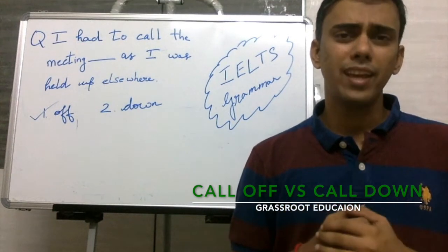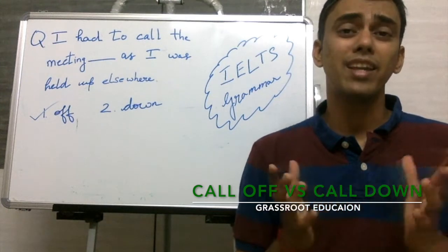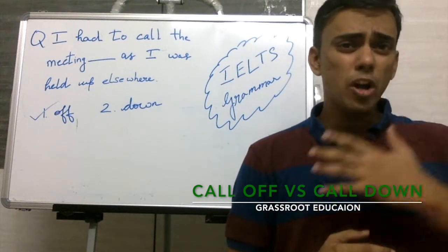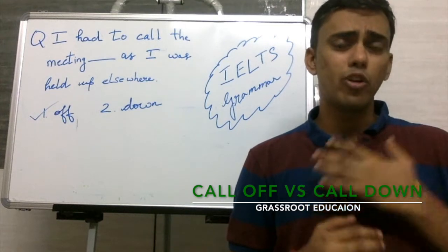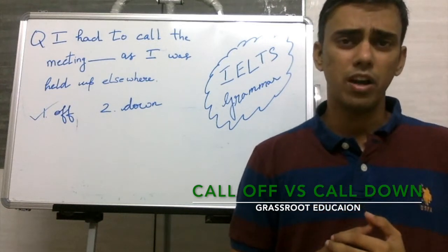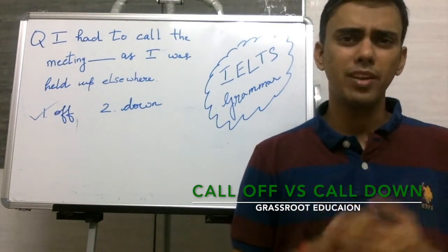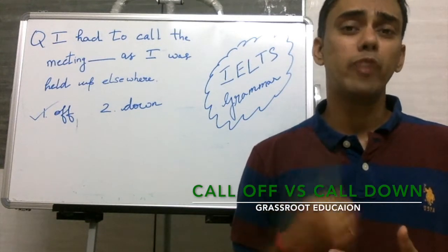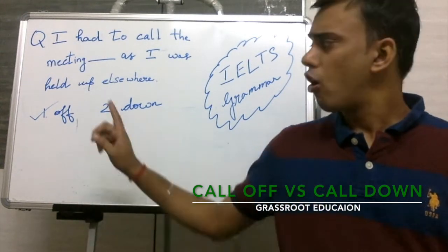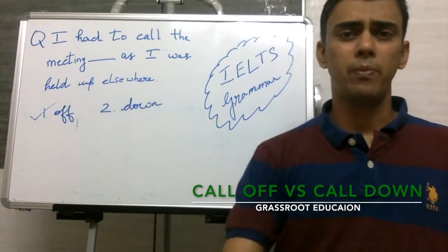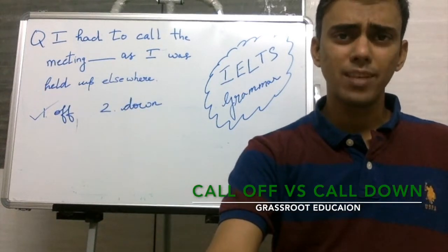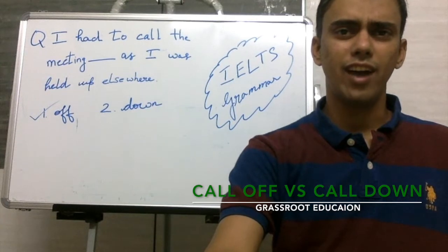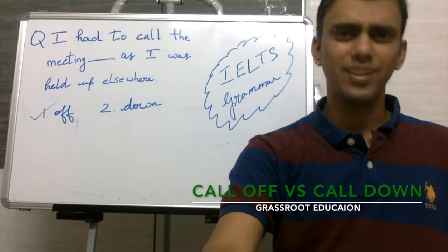The second usage of 'call down' is when you are being scolded. For example: 'My teacher called me down for not having completed the homework,' which means I got scolded by my teacher. So these are the two new phrasal verbs we learned today — call off and call down. Keep learning these grammar concepts so that you can score more in your exam. I'll see you in the next lesson.